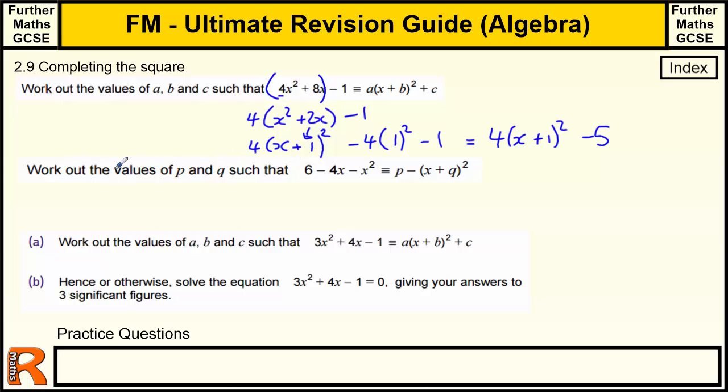Okay, we've got a slightly harder version. Work out the values of p and q such as this. So you've got the negative x squared here. And it wants it in this form where you've got the negative there. So we're really just going to complete the square on what we've got here.